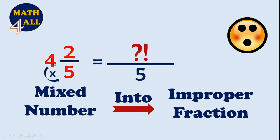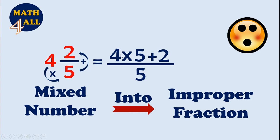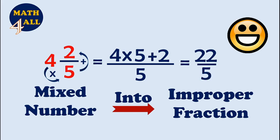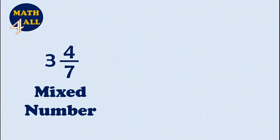Now, how to get the numerator? Multiply the whole number by the denominator: four times five equals twenty. Then add the numerator of the fraction: twenty plus two. The answer is twenty-two fifths, or twenty-two over five.